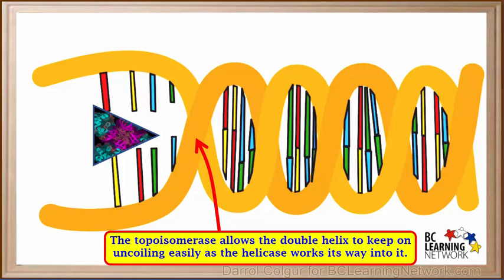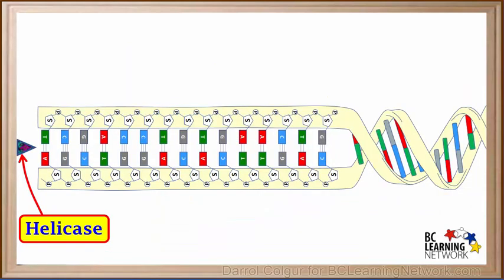If you would like to learn more about topoisomerase, look it up on the internet. It's quite a fascinating enzyme. The process is much easier to illustrate if we think of the two strands as being uncoiled to begin with. Remember, this is only a simplified model.